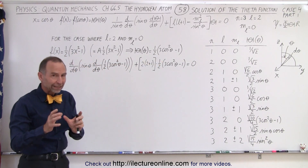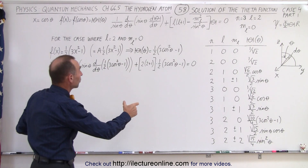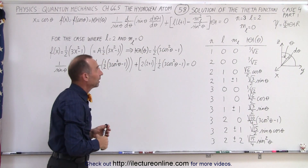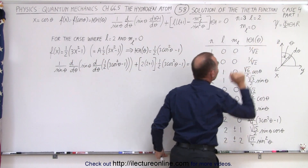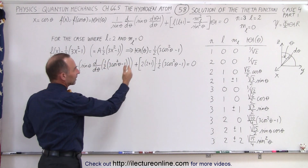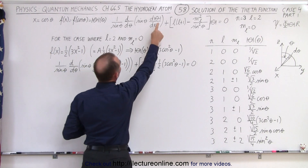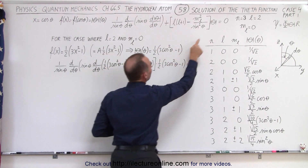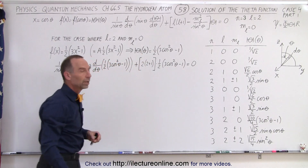Now, to show that this is indeed the solution to the differential equation, we're going to take this and plug it into the original differential equation that was determined by solving for the theta function. We're going to show that the left side equals the right side. So we've replaced the function by 1 half times 3 cosine squared minus 1 here and here.